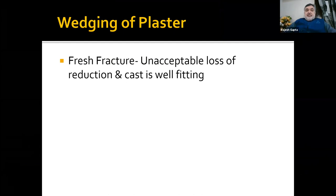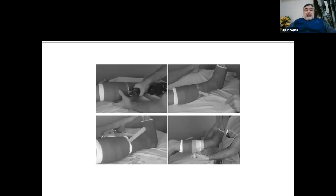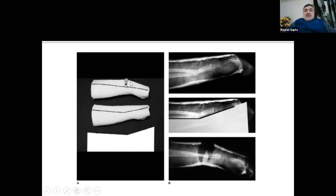Wedging of plaster cast: wedging is done in fresh fractures where there is unacceptable loss of reduction and the cast is well fitting. We do it usually after 48 to 72 hours when the plaster has completely dried, and it is done for correction of angulatory deformities. We cut the plaster at the apex of the deformity — two-thirds of the circumference of the cast is cut. The wedge is opened and held with a cork screw or wooden piece; the cut is made at the concave side of the deformity. After correction of the deformity, we repair the plaster with a fresh bandage.